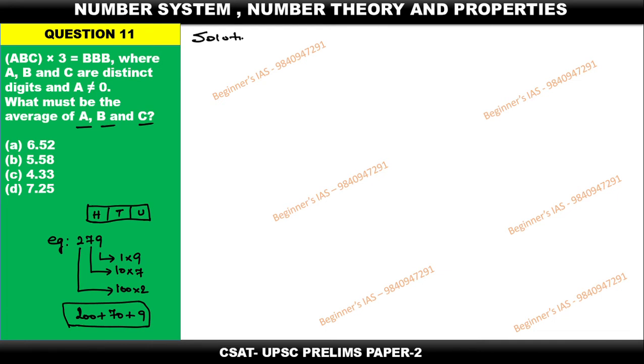How to find out the average of A, B, and C? Listen, same logic you need to apply here. ABC × 3 = BBB. Just express this with respect to the place values.